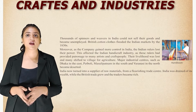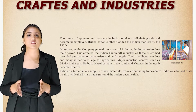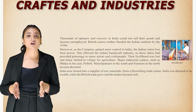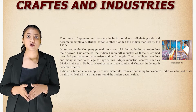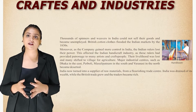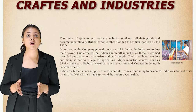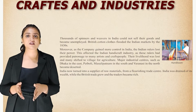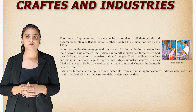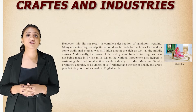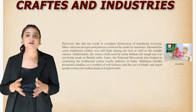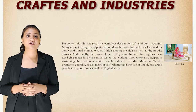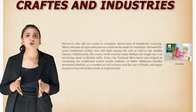Major industrial centers such as Dhaka in the east, Petaboli and Masulipatnam in the south, and Varanasi in the north became deserted. India now turned into a supplier of raw materials from a flourishing trade center. India was drained of its wealth while British trade grew and traders became rich.